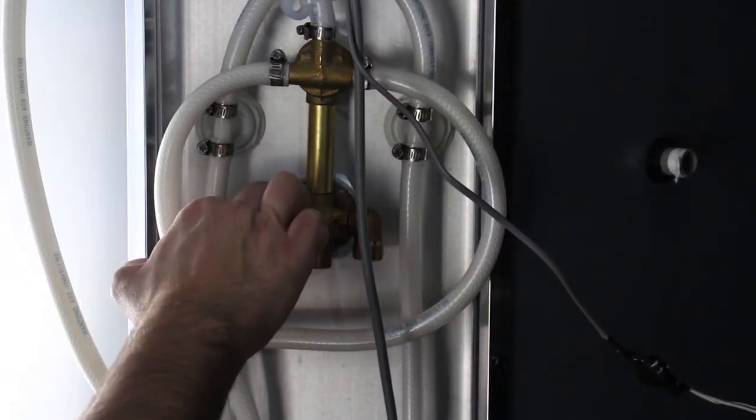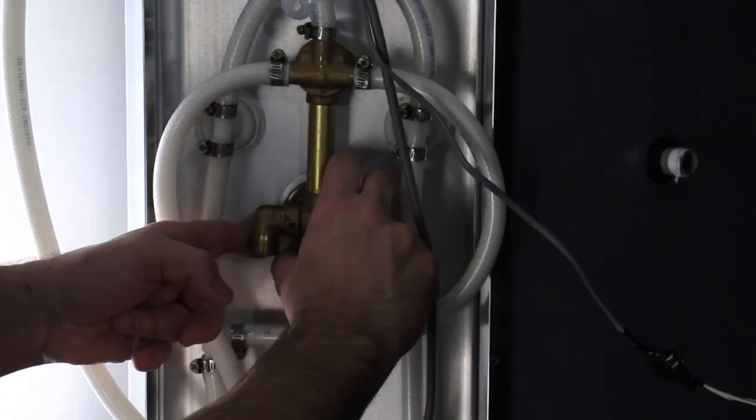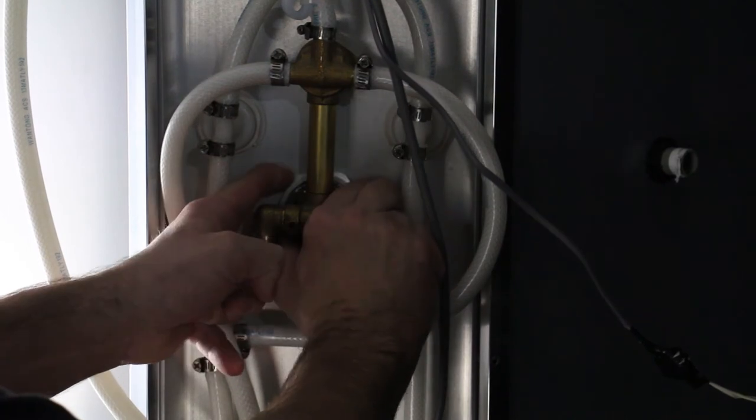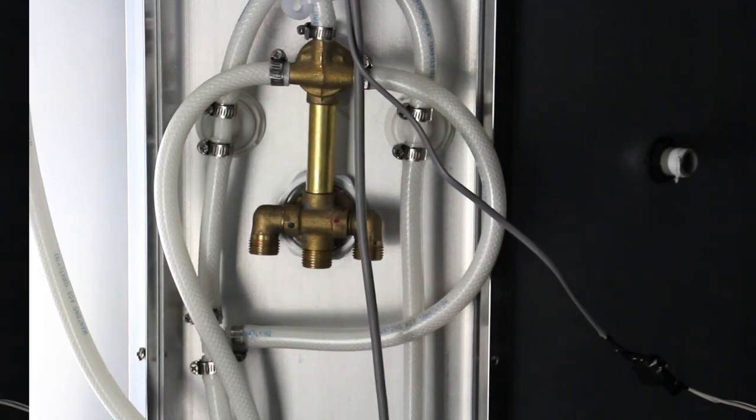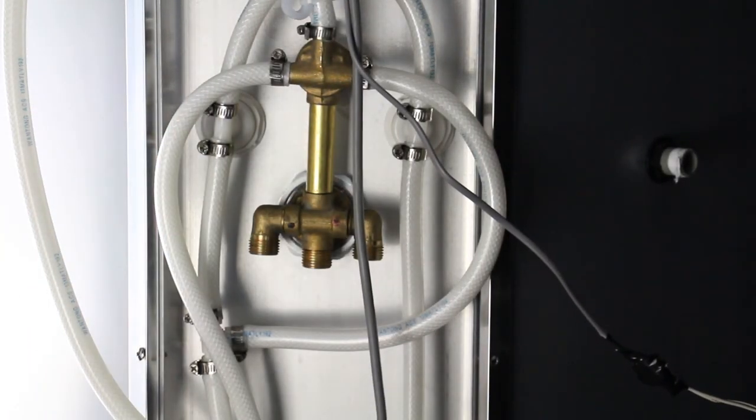So once you have the valve pushed through, you simply align the hex nut and secure in place along with the washer behind it, making sure the valve is now nice and tight into position. You can now reconnect all your hoses ready for turning the water back on.